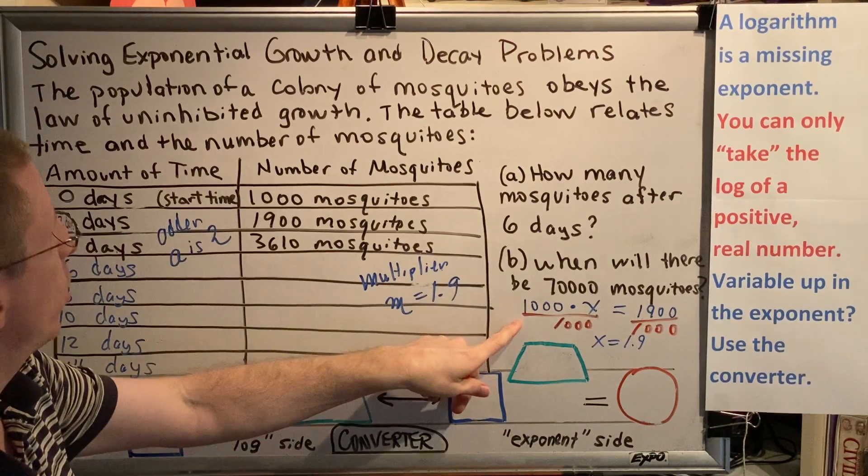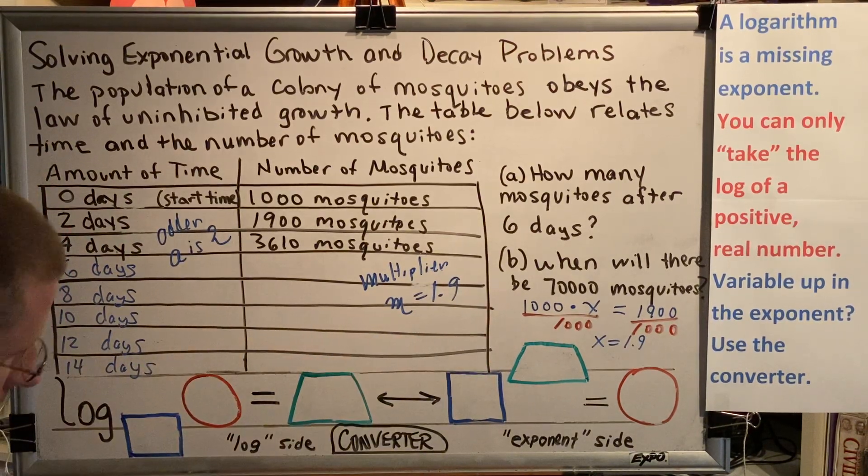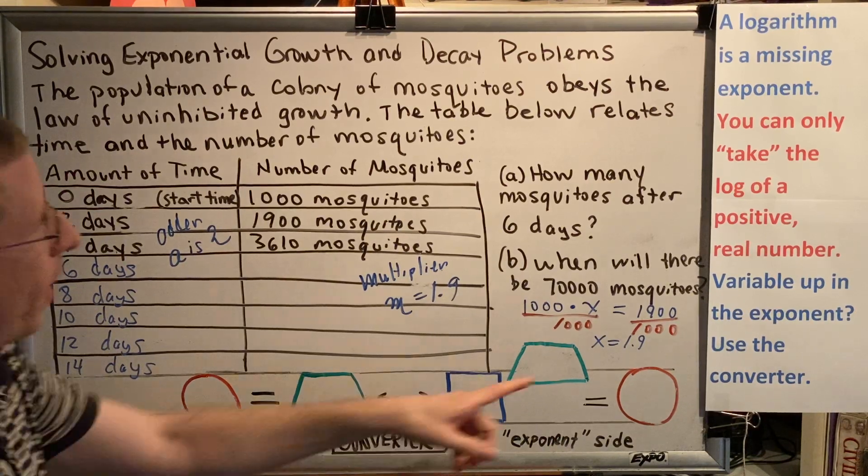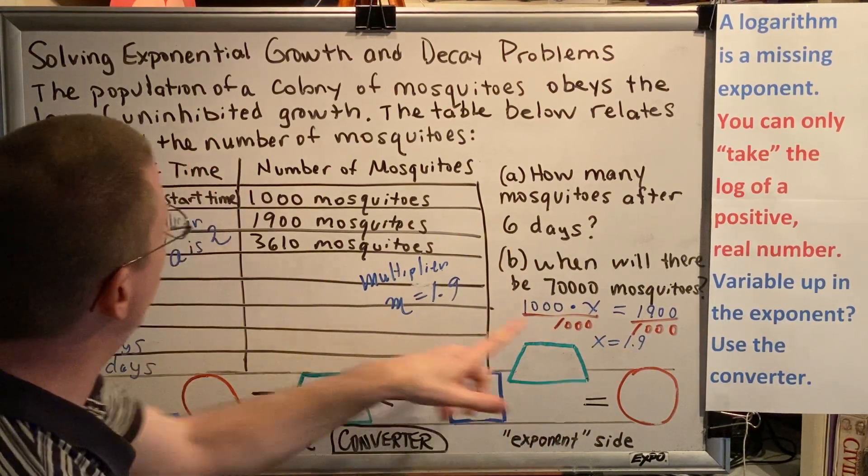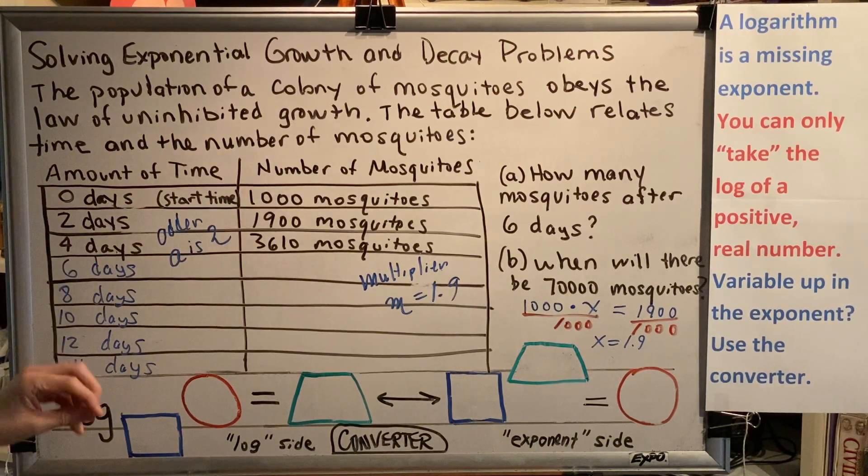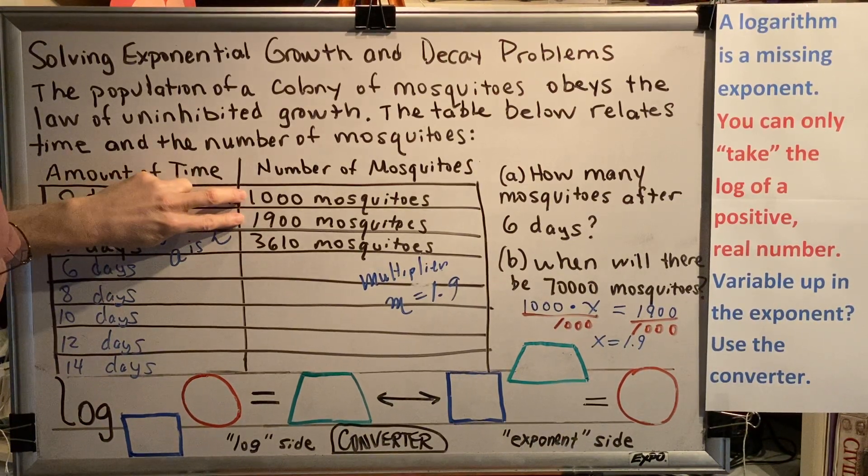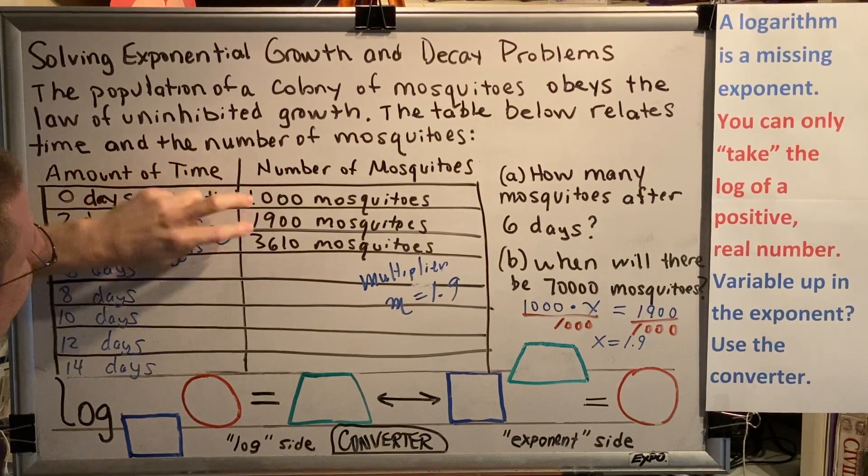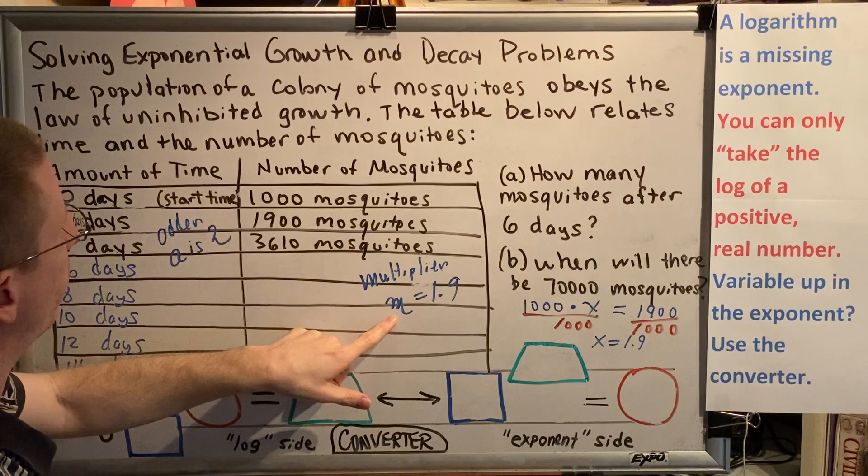I don't want you doing this kind of algebra every time you see a problem like this. I want you to pick up on the pattern and then just use the pattern. Notice what we ended up doing to get the 1.9. We took the 1,900 and divided it by the 1,000. So in the future, all you have to do is take two adjacent numbers and take the bigger one and divide it by the smaller one.